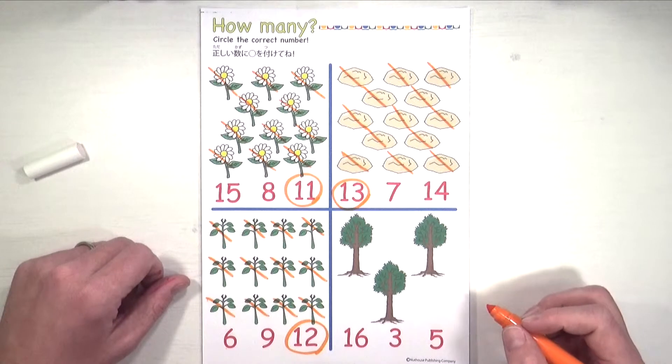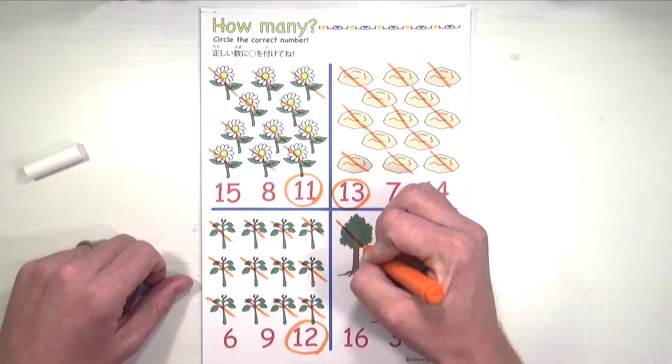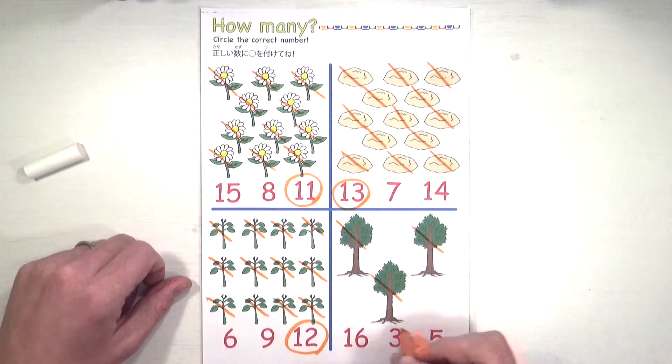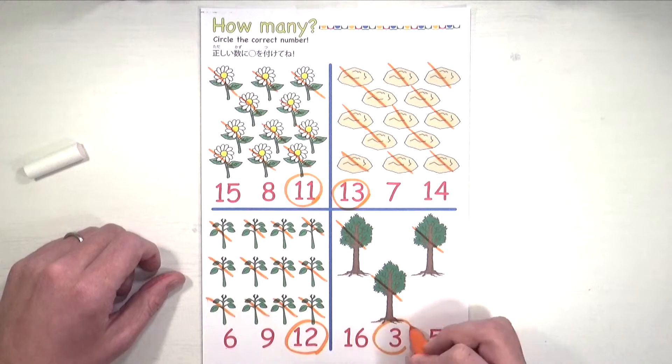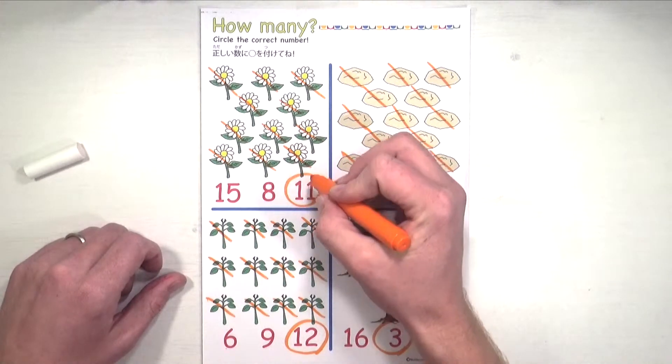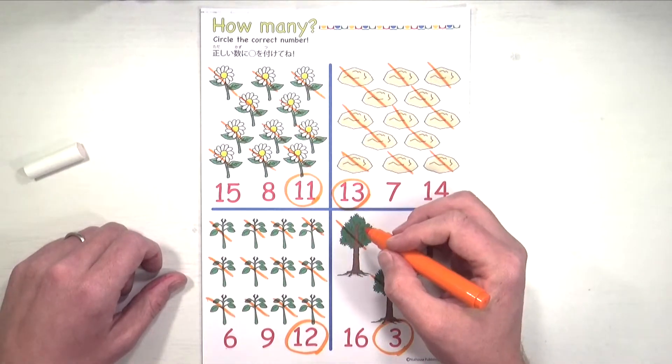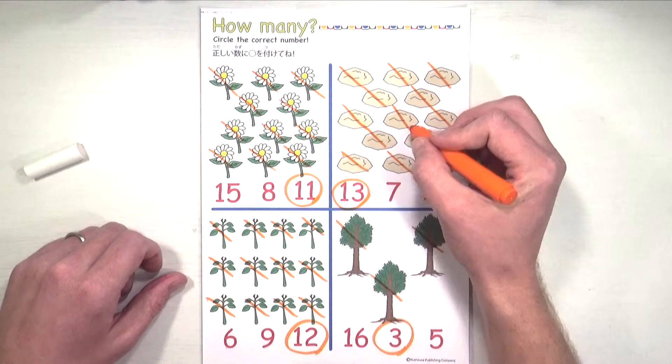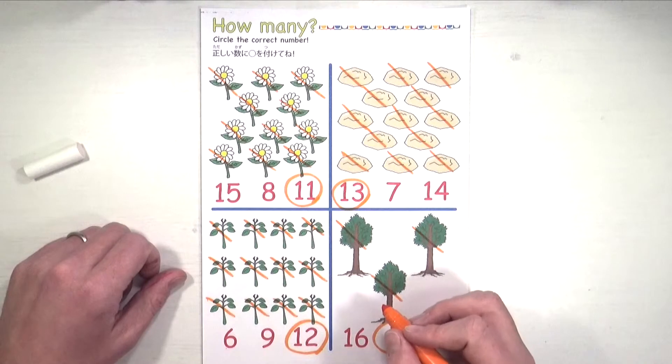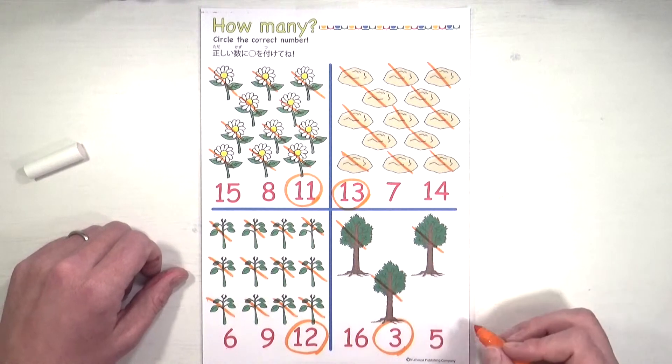All right. And how many trees? This one looks pretty easy. Let's try it. Let's count. One, two, three. Well, three. Which one is three? I think we all know that this is three, isn't it? Three. So we'll circle three. This one, a one and a six. This is sixteen. And this one over here is five. So there are eleven flowers, thirteen rocks, twelve plants, and three trees.